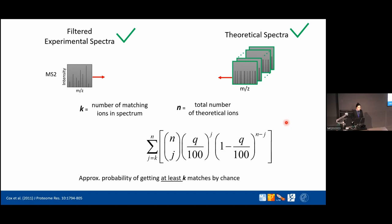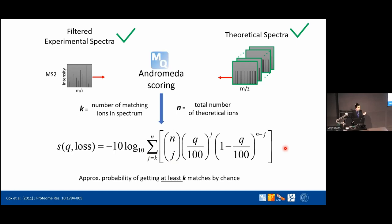The Andromeda score is then calculated as −10 × log(P), where P is the probability of getting at least k matches by chance. The reason for the −10 × log transform is that a lower probability of a random match means higher confidence, but we want a higher score to mean higher confidence. So we invert it with the negative sign, and multiply by 10 for scaling. The best score wins.